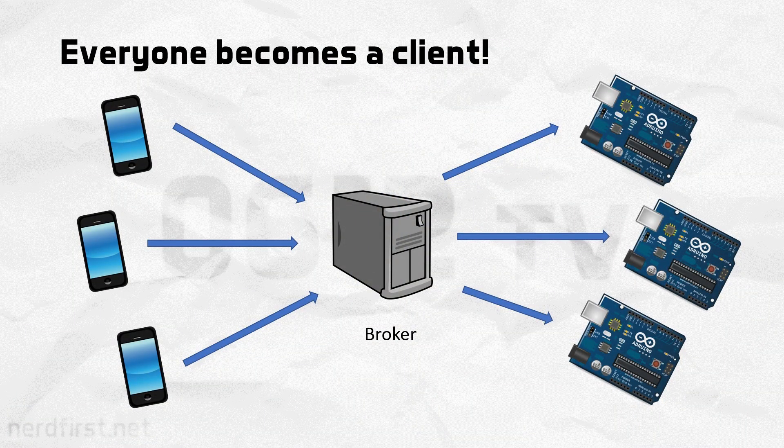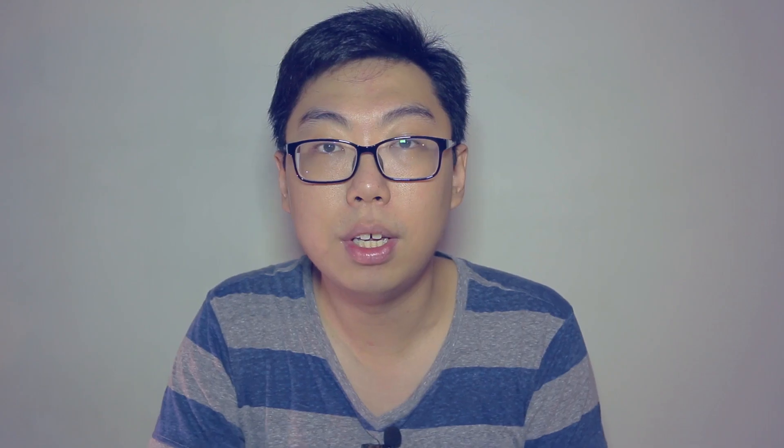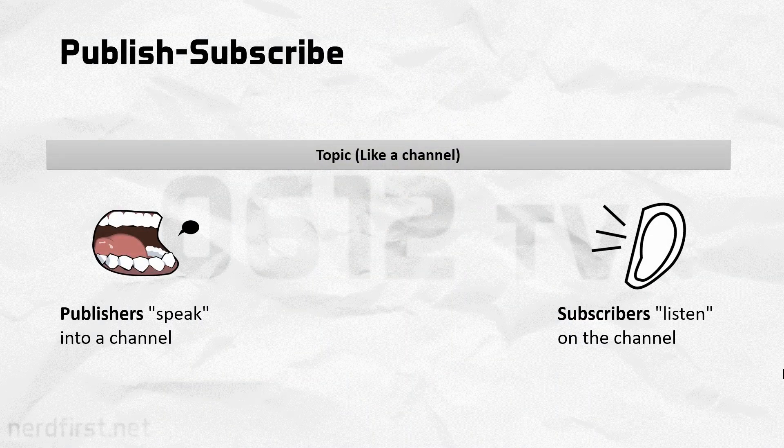Devices now never connect directly to each other — they connect to the broker, who forwards the messages along. What this means is that essentially everything becomes a client; only the broker acts as a server. How publishing and subscribing comes into play is through what is known as topics. A topic is essentially a channel of communication, so if I publish to a topic, everyone who is subscribed to that topic will receive that message. It's as simple as that.